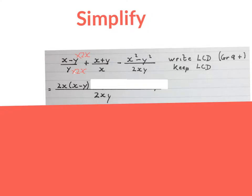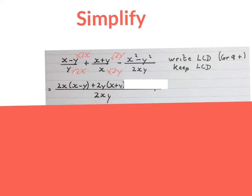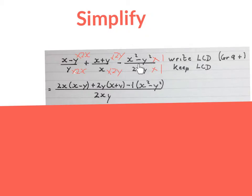Then you ask: what do I times this x to get to 2xy? You have to times the x with 2y to get to 2xy, and you also times that at the top. That gives me a plus 2y times bracket (x plus y). Then you ask: with what do I times 2xy to get to 2xy? That is times 1, so you also times the top by 1, then write minus 1 times the bracket.